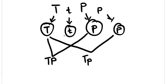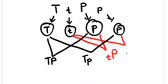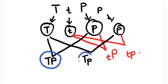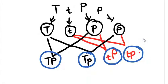Similarly, the recessive allele for tallness — the allele that produces shortness — can combine with the dominant allele for color, which produces purple color, and can also combine with the recessive allele for color, which produces white-flowered plants. So these are all the possible combinations of alleles we can see in the gametes produced from the F1 generation. These are our gametes — independent assortment has taken place during gamete formation.